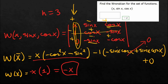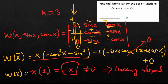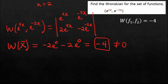Now, negative x is not equal to zero. So if the question was 'are these functions linearly independent?', we would say yes. And the same thing for the previous problem — we got a number that wasn't zero. So this Wronskian is not equal to zero, so the functions are linearly independent.